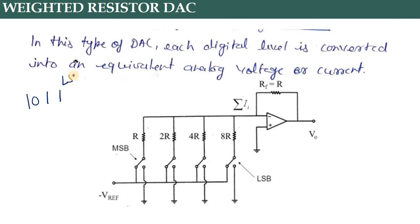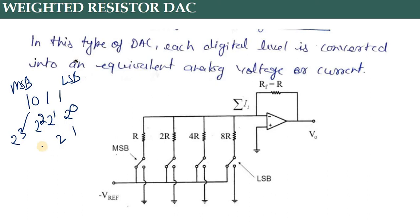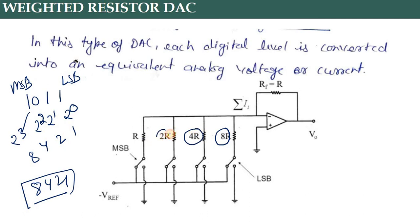The bit weights are based on powers of 2: 2 raise to the power 0, 1, 2, and 3 — that means 1, 2, 4, 8. That is why we call it the 8-4-2-1 weighted code. Each bit is assigned a unique weight: 2 raise to the power 3, 2 raise to the power 2, 2 raise to the power 1, and 2 raise to the power 0. We provide each bit from the LSB side to the MSB side with different weights.